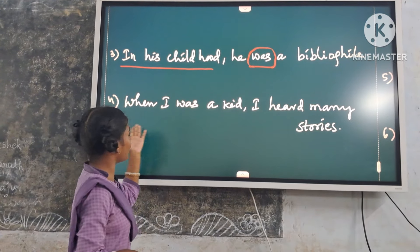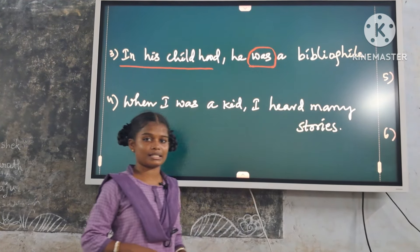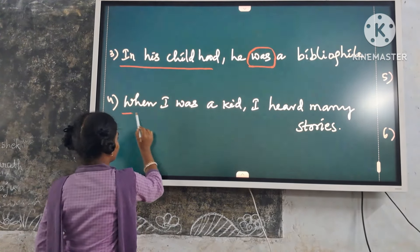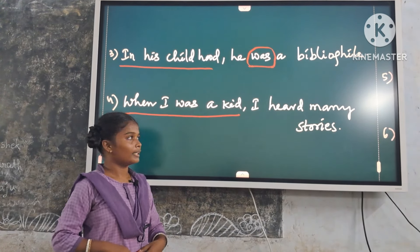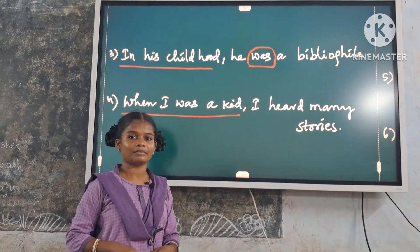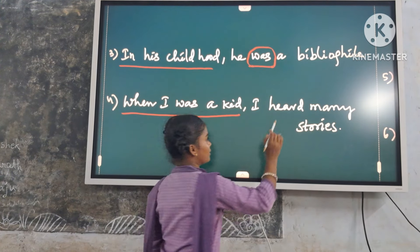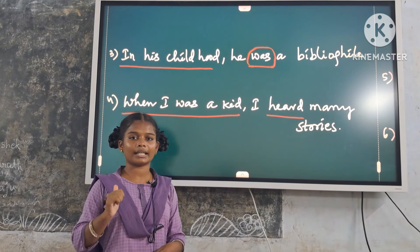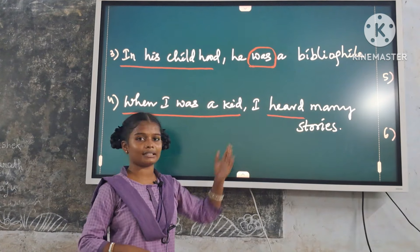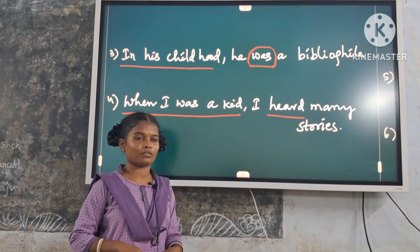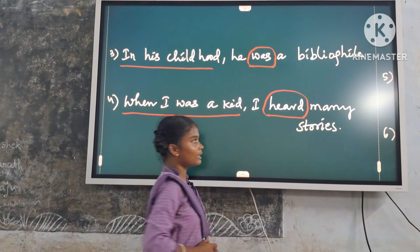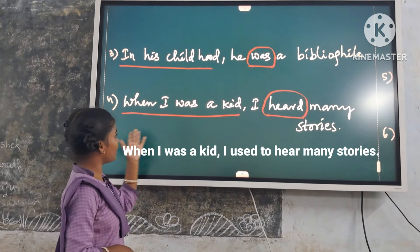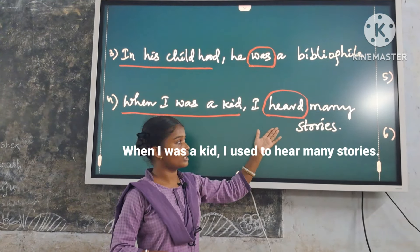Fourth example: 'When I was a kid, I had many stories.' Here, 'when I was a kid' is a time expression. But the verb in the main clause is a stative verb — that is, a verb of sense. So we use only 'used to'. Replace it with 'used to hear'. Answer: 'When I was a kid, I used to hear many stories.'